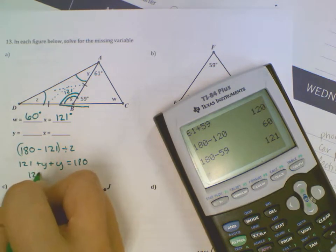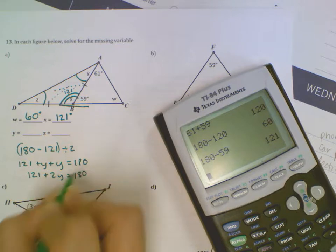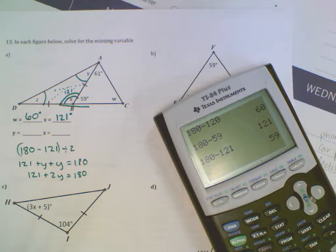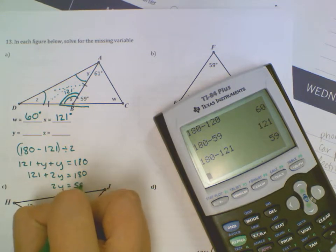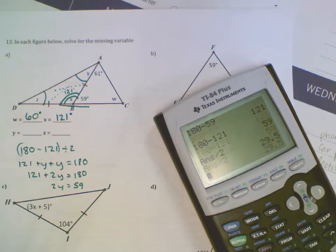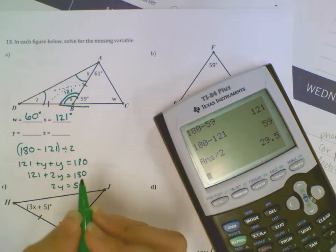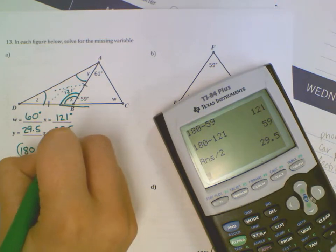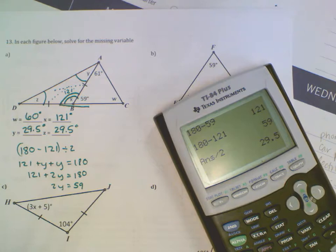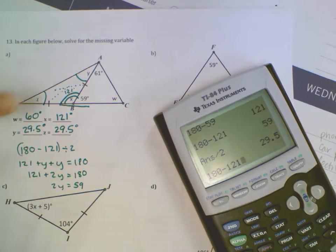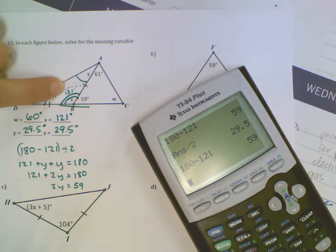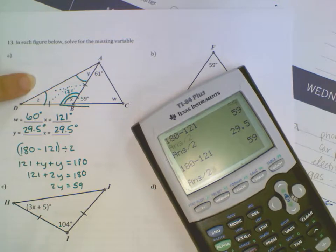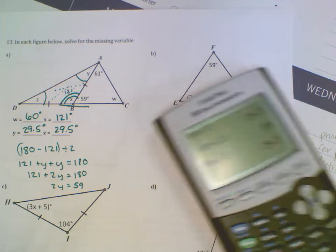So 121 plus 2Y equals 180. 180 minus 121 gives me 59. So 2Y equals 59. So if I divide that by 2, I get 29.5 for Y and Z. You could also do 180 minus 121, taking this away, and you're left with 59 degrees that you need to split between these two evenly. So you could just divide that by 2 to find 29.5 also. That'll work for you as well.